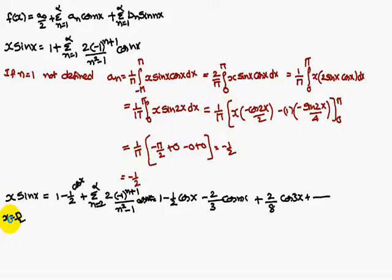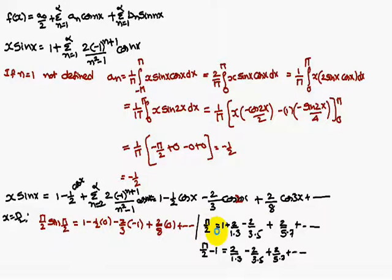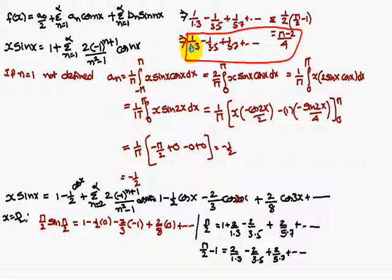Now, substituting x = π/2 on both sides: (π/2) sin(π/2) on the left. Since sin(π/2) = 1, the left side is π/2. On the right side, substituting and simplifying gives: π/2 = 1 + 2/(1×3) − 2/(3×5) + 2/(5×7) − so on. Moving 1 to the left: π/2 − 1 = 2[1/(1×3) − 1/(3×5) + 1/(5×7) − ...]. Dividing both sides by 2: 1/(1×3) − 1/(3×5) + 1/(5×7) − ... = (π − 2)/4.